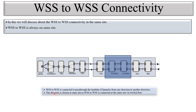WSS-to-WSS connectivity is used to pass through lambdas from one direction to another direction, and the direction is chosen at the same side by the switch ports. For two directions we need two WSS units, for three directions we need three WSS units, and each WSS represents one direction. This is basically the DWDM signal flow where we pass lambdas from one location to another. There are other methods in CDC configuration, but here we use one WSS per direction.